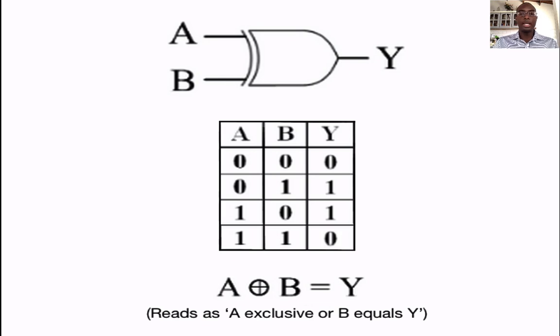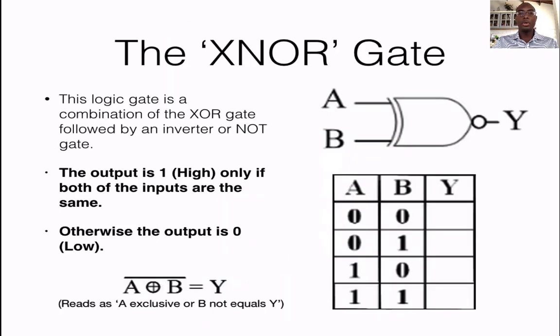The last and final gate on our list will be the XNOR gate. This logic gate is a combination of an XOR gate followed by an inverter or NOT gate. For this particular gate, your output is high only if both of your inputs are the same. So for this one, 0, 0 should give me 1 and 1, 1 should also give me 1. Anything else would give me 0.